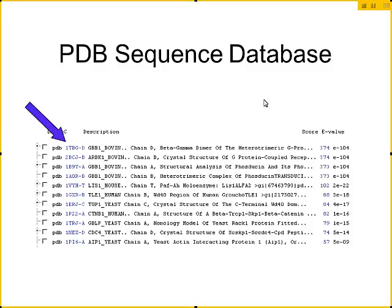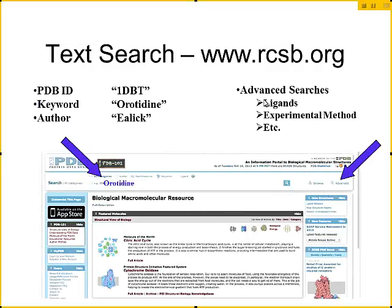High sequence similarity means I'm confident that they shared a common ancestor and have very similar structures. You can look at the alignment and see if it's either identical or just similar. Searching using sequence similarity is a good way of seeing if your protein of interest has a structure in the protein databank, or if a similar protein exists that you can use for modeling your protein of interest.